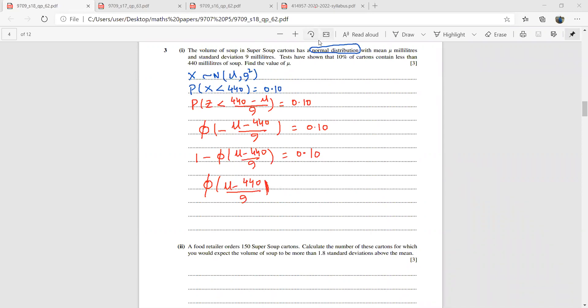So this is going to be 1 minus 0.10 is going to be 0.9 here. So mu minus 440 over 9, that is phi inverse of 0.9.